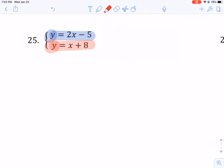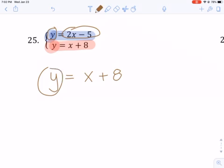So what you can do is, right here we know y equals 2x minus 5. So if I write the second equation here, which is y equals x plus 8, I can replace this y with this expression here.